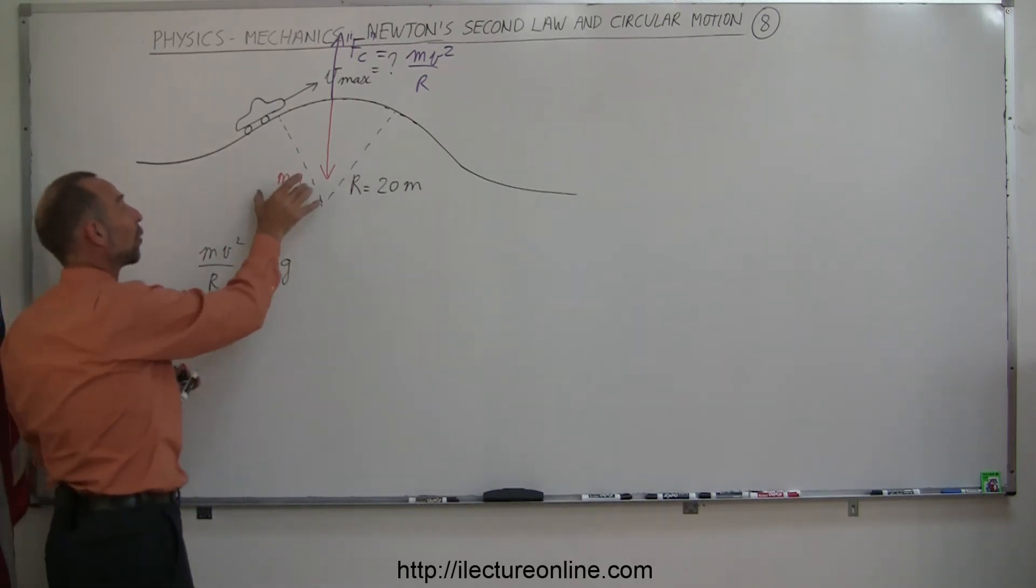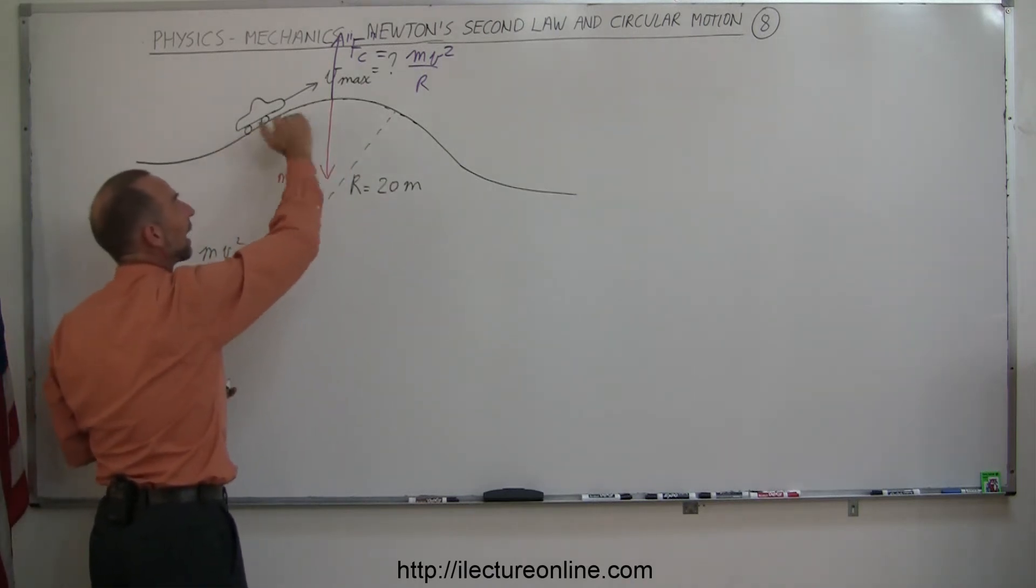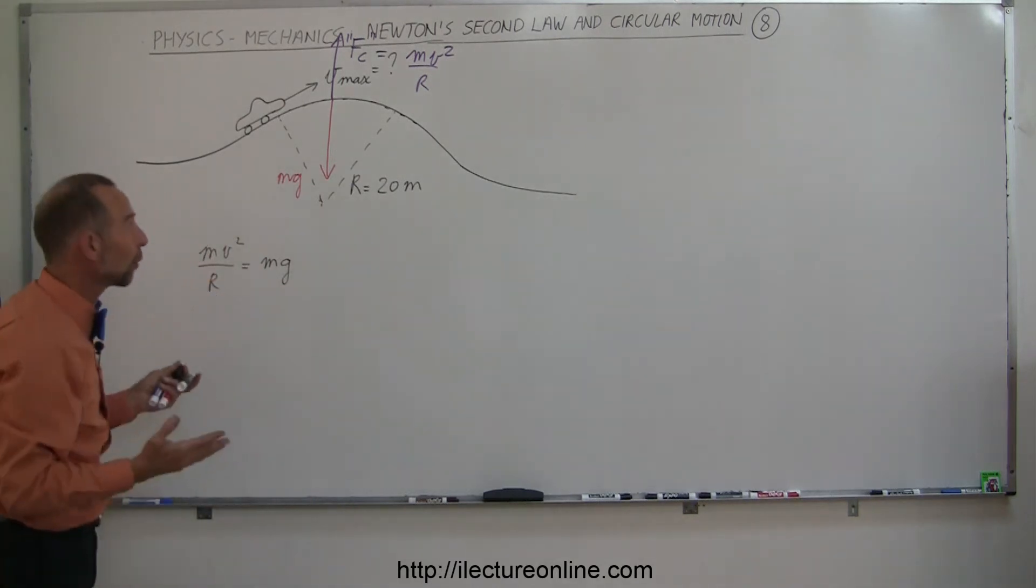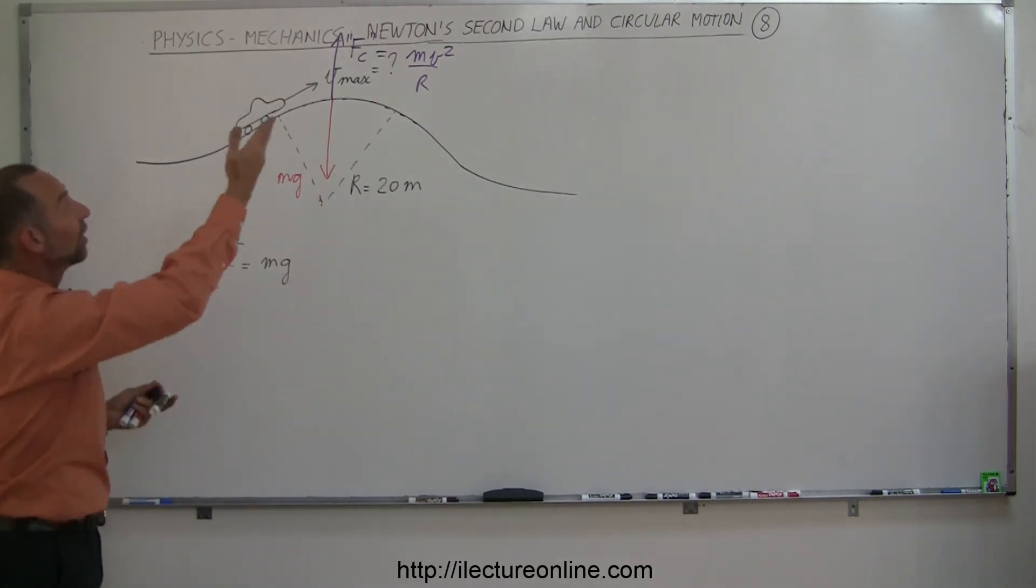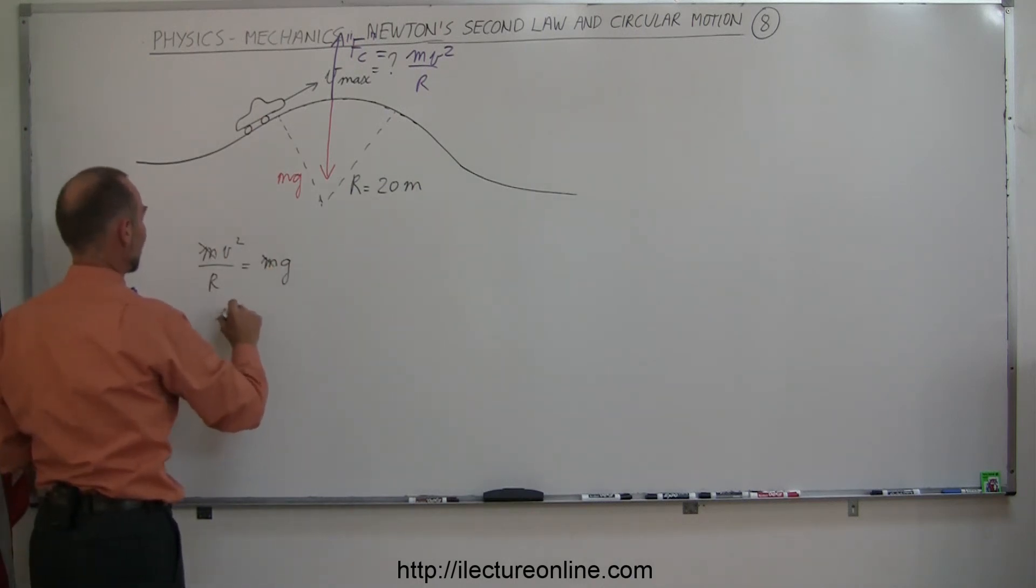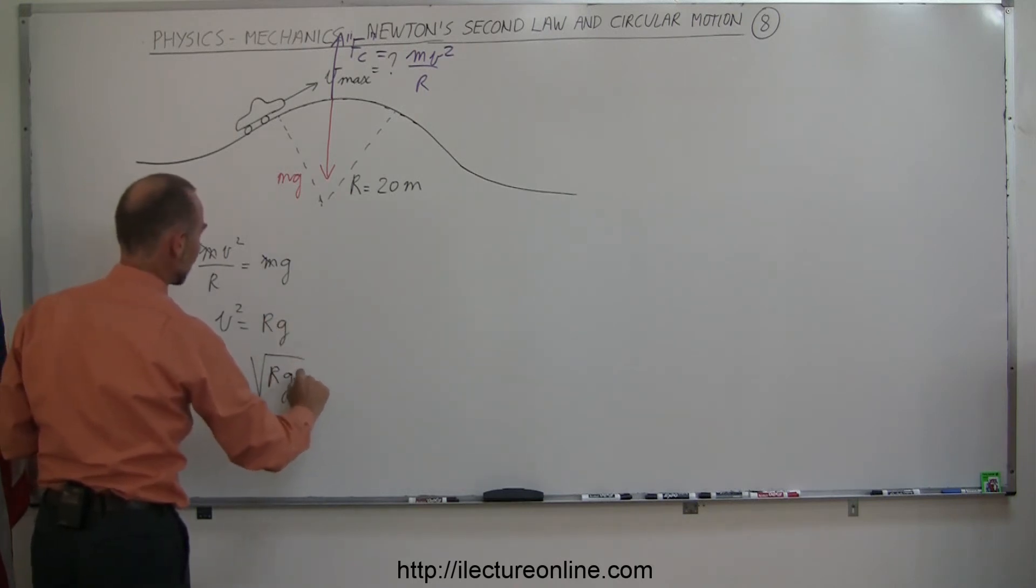This is the centripetal force which provides that force inward to keep the car on the road. But if it's not enough, if the weight is not enough and you're going too fast, the car will indeed go airborne. The mass cancels out on both sides, so we have v squared is equal to r times g, or v is equal to the square root of r times g.